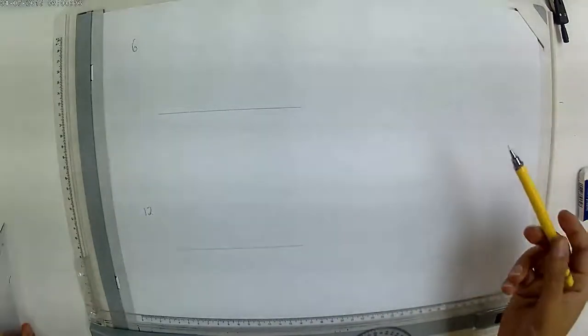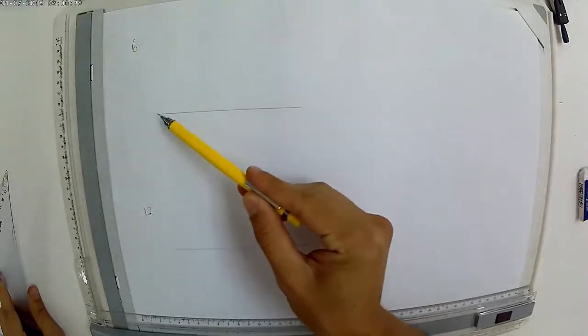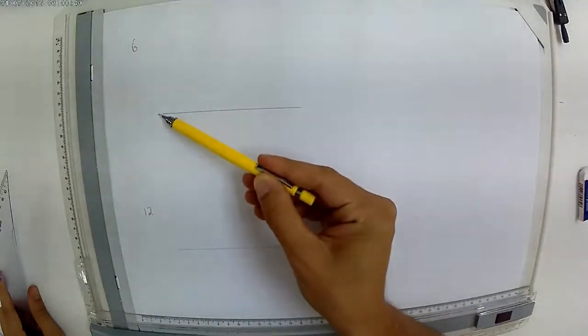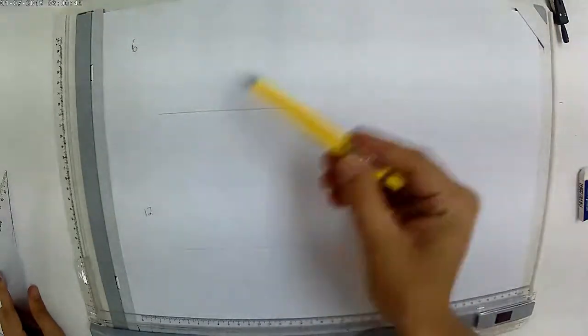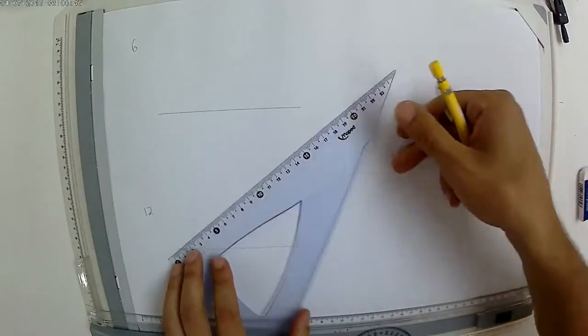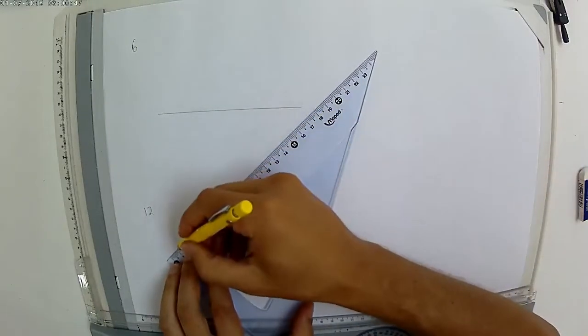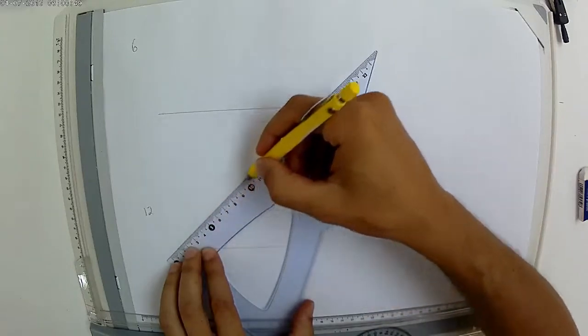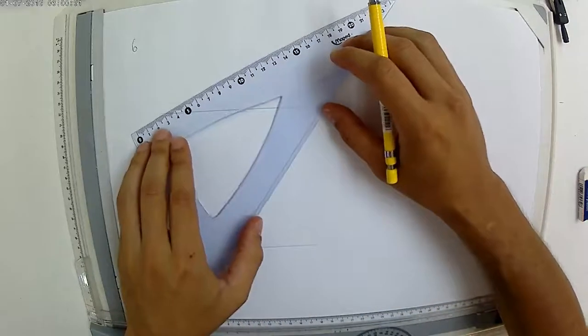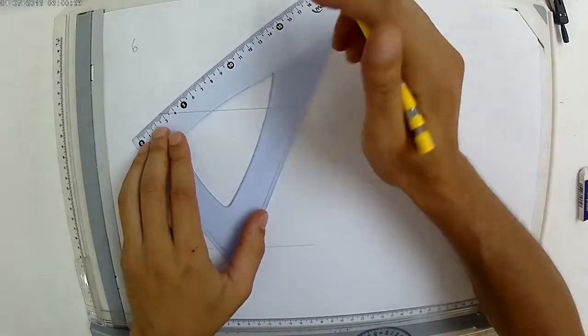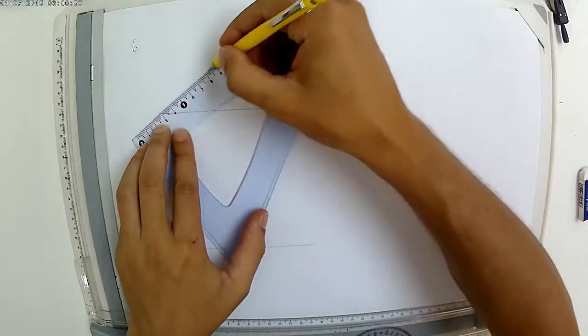The first thing we have to do is you need to construct a random line from the one point of the baseline anywhere. The degree doesn't matter. So let's have a random line up here and a random line up here.